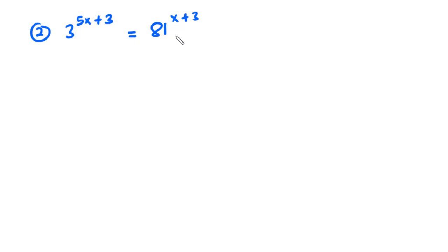We are going to find the value of x. Now 81 is equal to 3 times 3 times 3 times 3, which is equal to 3 exponent 4.